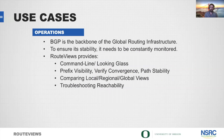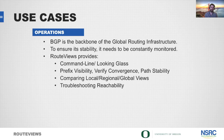Some of the use cases for the network operations community are fairly obvious. BGP is the backbone of the global routing infrastructure and we need to constantly monitor it. Route Views helps achieve that goal by providing a command line and looking glass interface for anyone able to telnet to a collector. We provide prefix visibility, convergence and path stability verification, the ability to compare local, regional, and global views, and it's a great tool for BGP troubleshooting — specifically reachability.